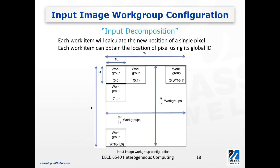On the x dimension we have work groups 0, 1, 2, and so on up to w/16 minus 1, giving us w/16 work groups on the horizontal dimension. We also divide the vertical dimension into work groups: assuming the image height is h, we divide it into 16 work groups — work group 0, 1, up to h/16 minus 1. This is how we divide the whole picture into work groups.